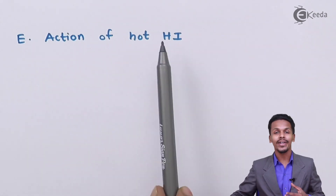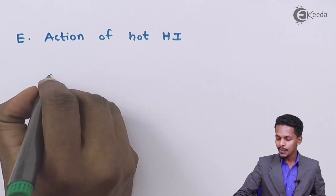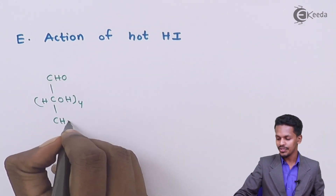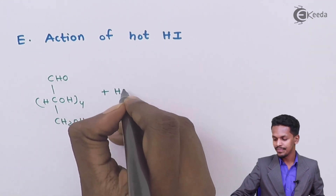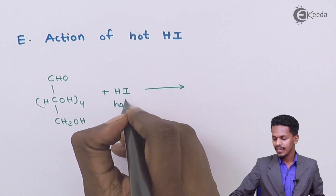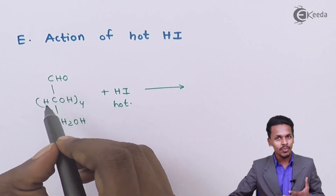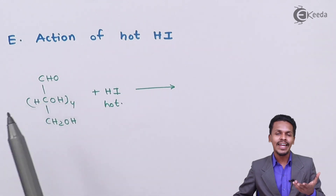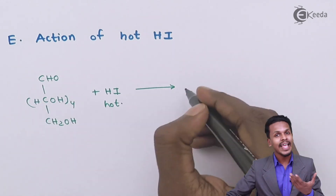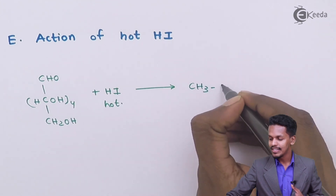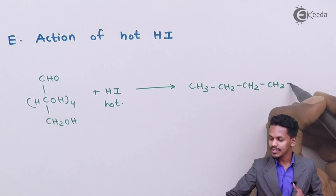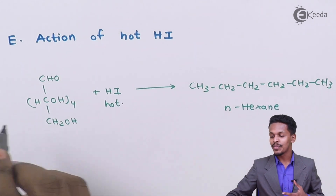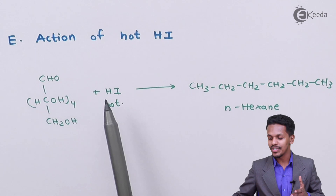The next reaction is the action of hot HNO3 on glucose. If we consider glucose — CHO, CHOH twice, and CH2OH — and treat it with hot HNO3, the hydroxyl groups of this polyhydroxy compound are reduced, and the product obtained is n-hexane: CH3–CH2–CH2–CH2–CH2–CH3.